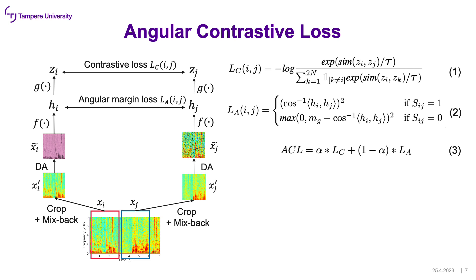Now I will introduce our proposed method. Inspired by what I introduced earlier, we apply the idea to the audio feature learning scheme in a self-supervised learning way. Given an audio spectrogram, two patches are cropped and mixed back with other patches from different audio data. Then data augmentation is applied. Network F is used to extract features, and projection head G projects the features into a lower dimension, ZI and ZJ. The contrastive loss is calculated on ZI and ZJ. On top of this, we empirically found that adding angular margin loss on ZI and ZJ is beneficial to the features. The final loss is the weighted sum of these two losses.